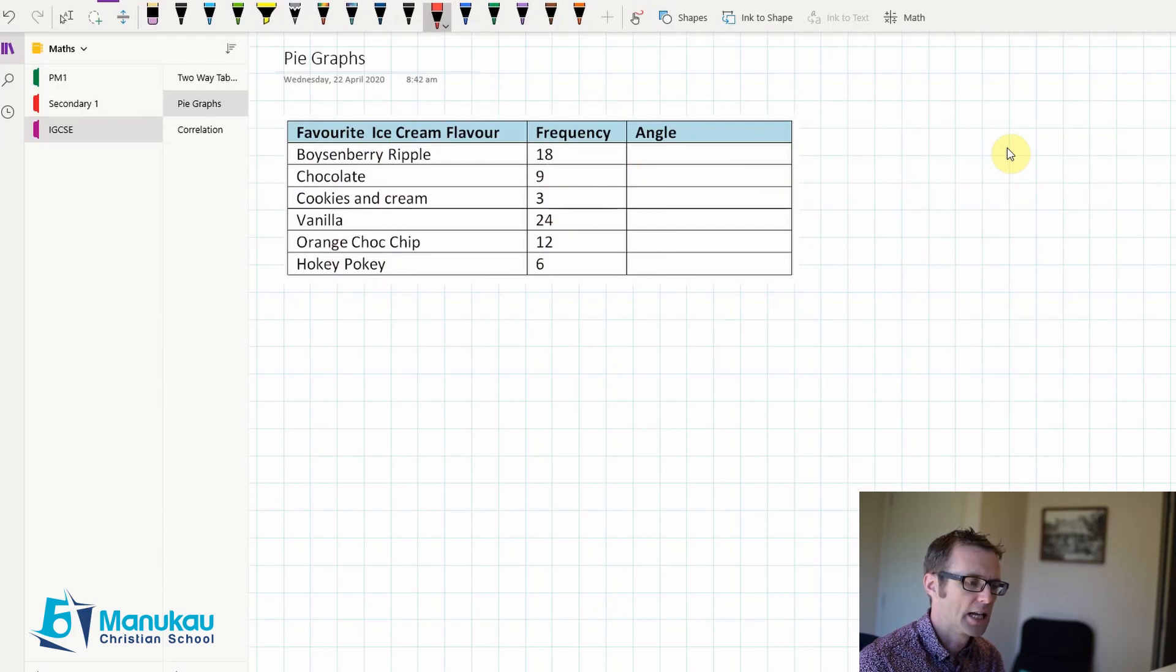So 18 and 9 are 27, 27 and 3 are 30, 30 and 24 is 54, 54 and 2 is 56, and 10 is 66, and 6 is 72. So we've got 72 people here.